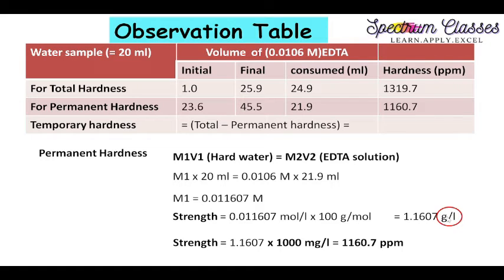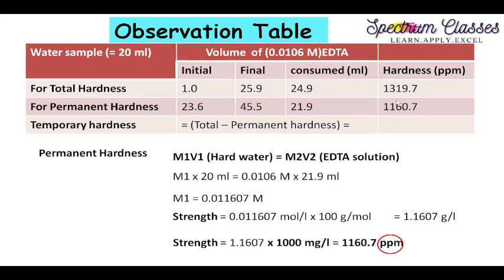Converting 1.1607 grams per liter to milligrams per liter by multiplying by 1000 — since 1 gram equals 1000 milligrams — I get 1160.7 mg/L, which equals 1160.7 ppm. This is the permanent hardness of the given water sample. In this manner we have obtained the total hardness and permanent hardness of the given water sample.